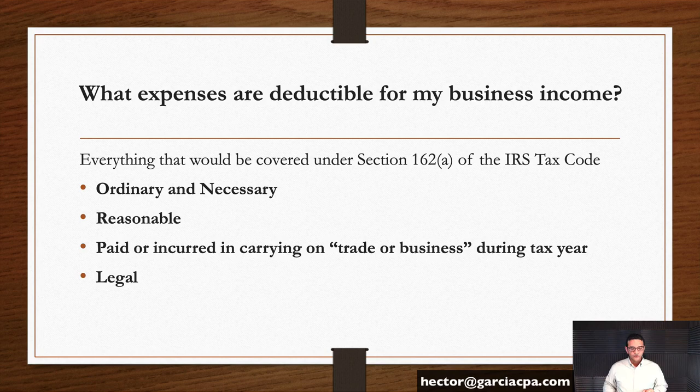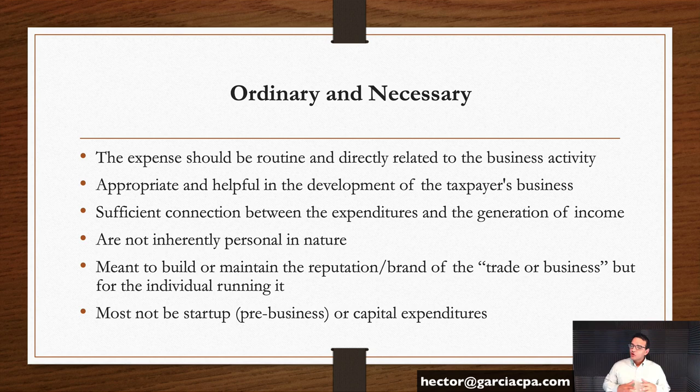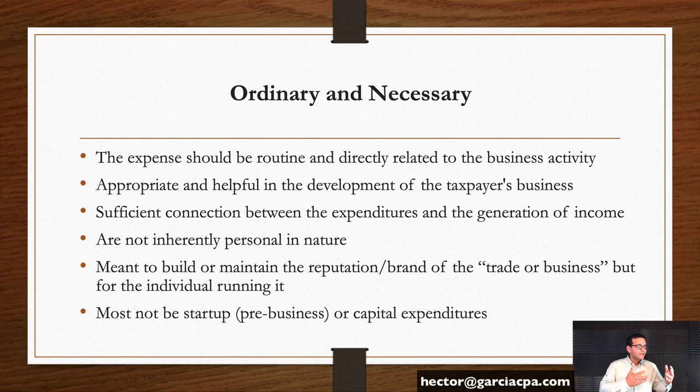Let's deep dive into ordinary and necessary. The expense should be routine or directly related to the business activities — it needs to be understood that that type of business normally makes those types of expenditures. The IRS has tons of data on hundreds of millions of taxpayers, so based on the type of business and classification, they can run statistics to know what ordinary means — what the norm is.